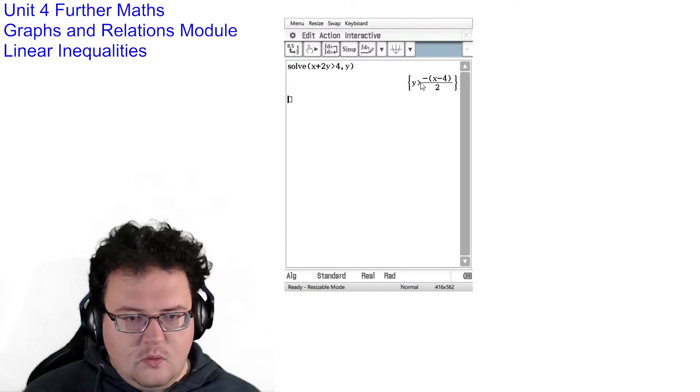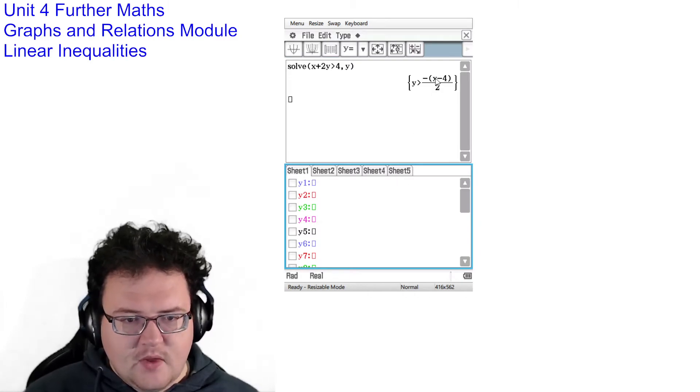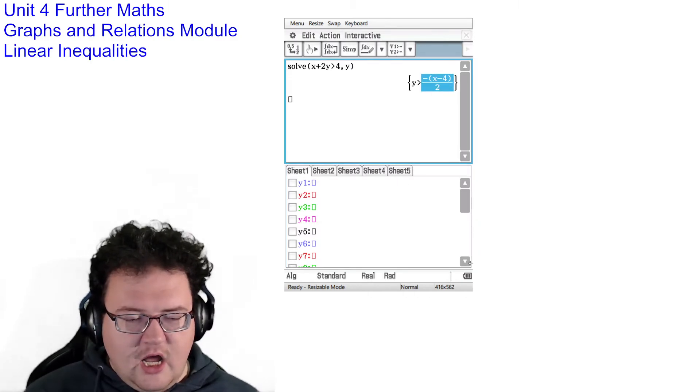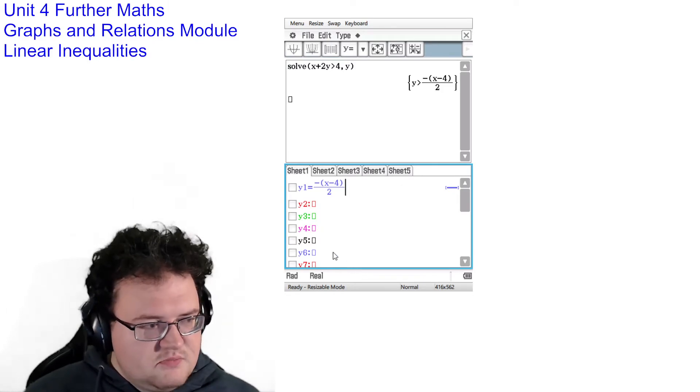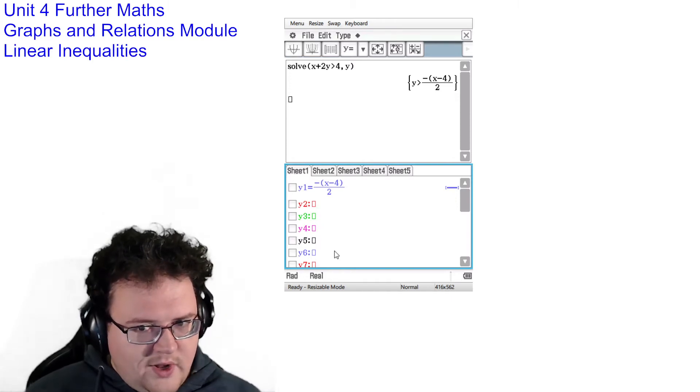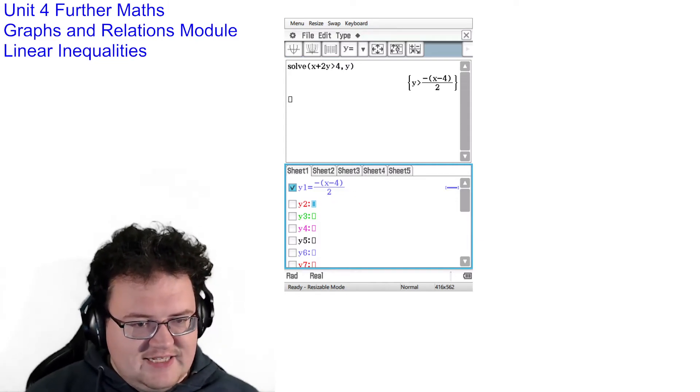Now what we do is we bring up split screen. I can now highlight my thing here and drag it down. Small problem. This is still equals. This is still an exact line.